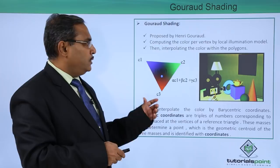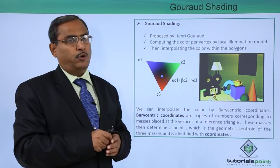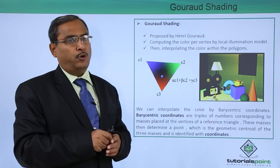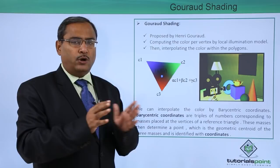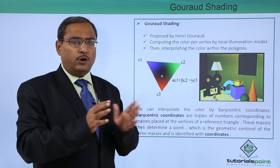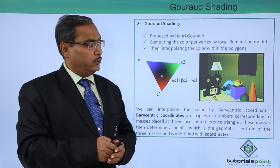Gouraud shading was proposed by Henri Gouraud. It works by computing the color at each vertex using the local illumination model and then interpolating the color within the polygons. In flat shading, after getting the color at a particular point within a polygon, that polygon is filled with the respective color. But here, we are interpolating the color within the polygons.